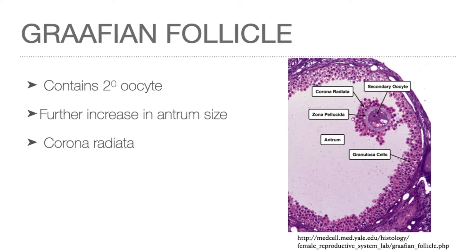Only one secondary follicle becomes dominant and is now called the Graafian follicle or mature ovarian follicle. At this stage, the oocyte continues meiotic division, producing two daughter cells: the first polar body and the secondary oocyte. Meiosis will be arrested at metaphase II and will only proceed if the oocyte is fertilized. Fluid-filled spaces appear among the granulosa cells at the base of the cumulus oophorus, resulting in detachment of the oocyte, which then floats free in the liquor folliculi surrounded by a few granulosa cells called the corona radiata.